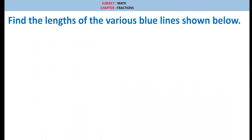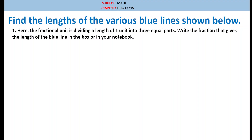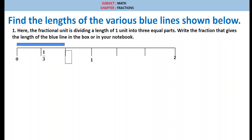Let us see. Find the length of the various blue lines shown below. Here, the fractional unit is dividing a length of 1 unit into 3 equal parts. Write the fraction that gives the length of the blue line in the box or in your notebook. If we observe, 1 is divided into 3 equal parts and the blue line represents the second part. So the first part is 1 by 3, therefore the second part is 2 by 3.